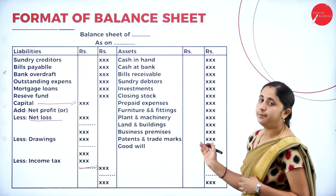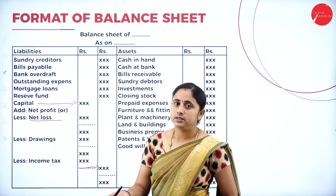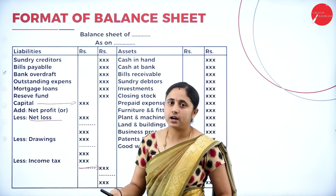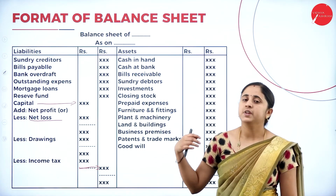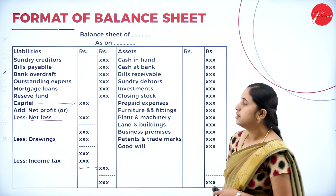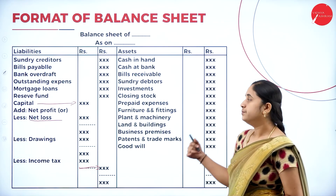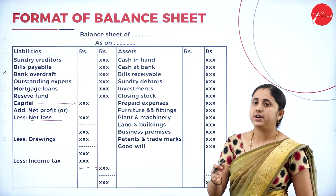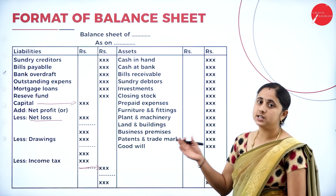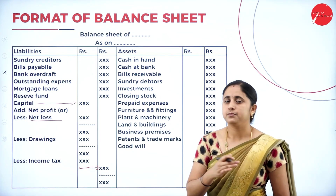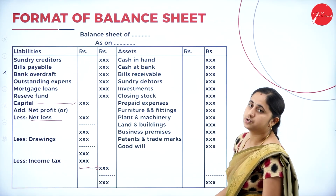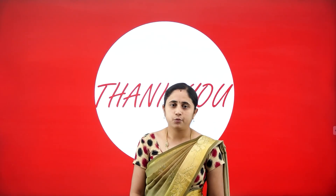In today's session we learned about final accounts of a sole trader: the meaning of final accounts, trial balance, trading account, profit and loss account, and balance sheet along with their formats. In the next session, let's continue with problems on final accounts of a sole trader. Before moving to the problems, you need to be able to identify and classify whether an item belongs to the trading account, profit and loss account, or balance sheet. Until then, keep watching. Thank you.